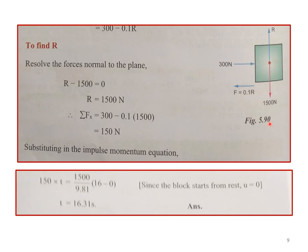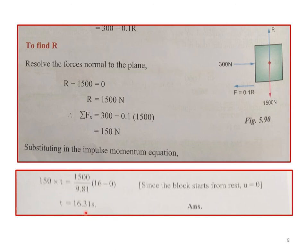Applying the impulse-momentum equation: 150 × t = m×v − m×u. Here u = 0 and v = 16 m/s, and mass = 1500/9.81. Solving, the time taken for the block to reach 16 m/s is 16.31 seconds.